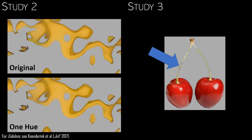And in a third experiment, we showed that observers were able to identify the one hue images when we showed them what to look for, such as the stem in case of the cherries here.